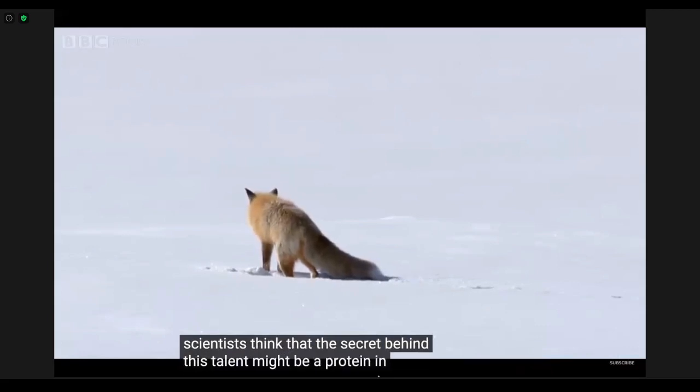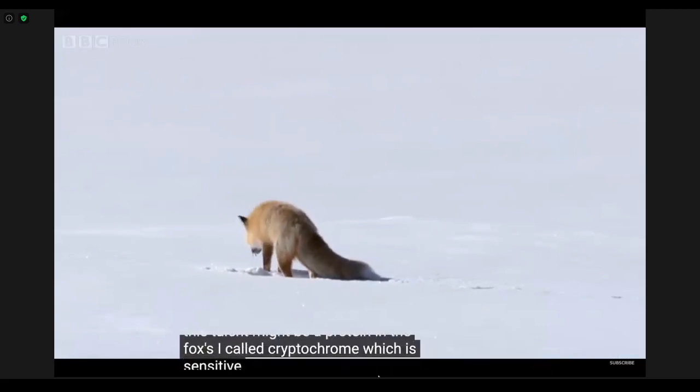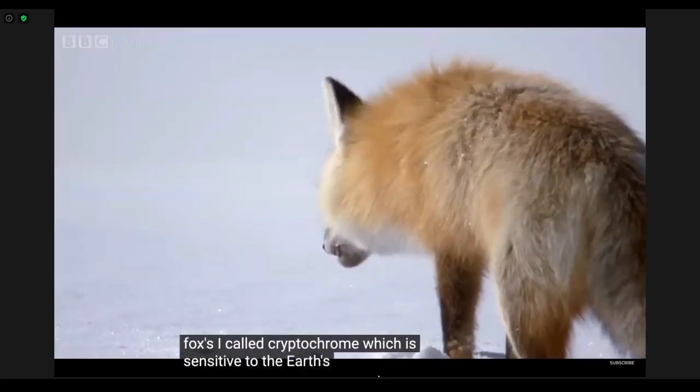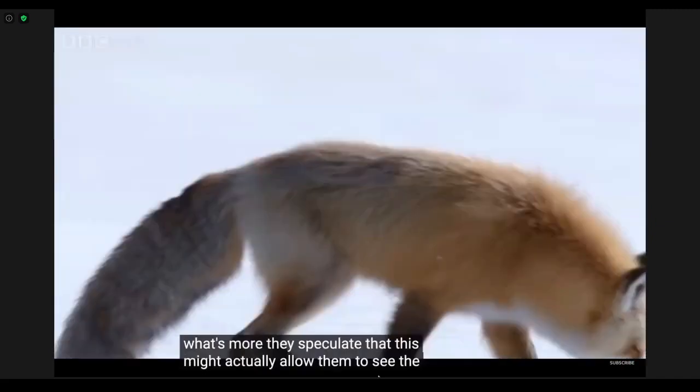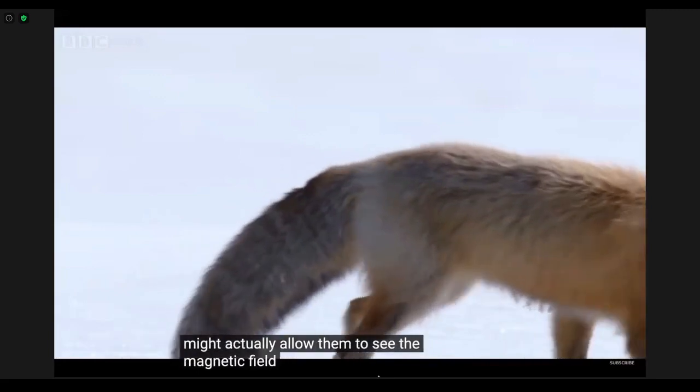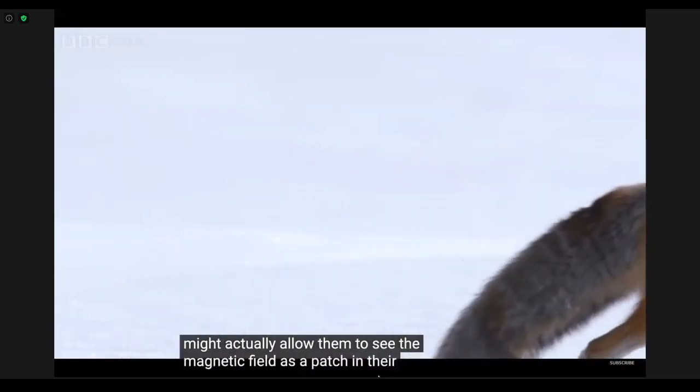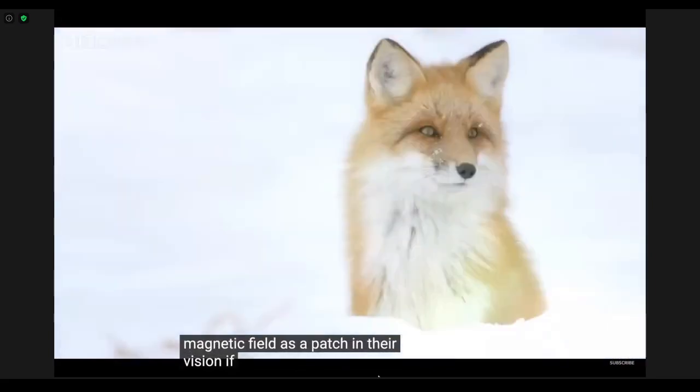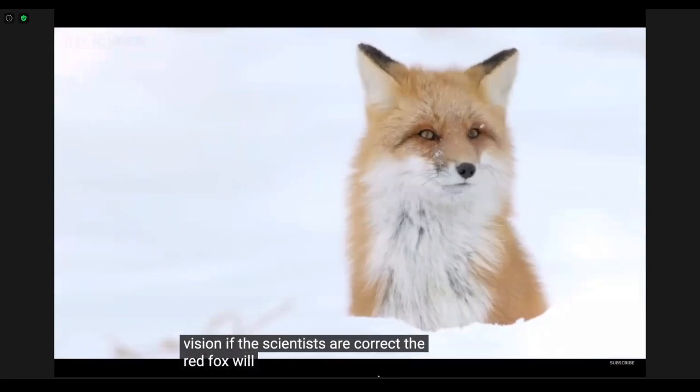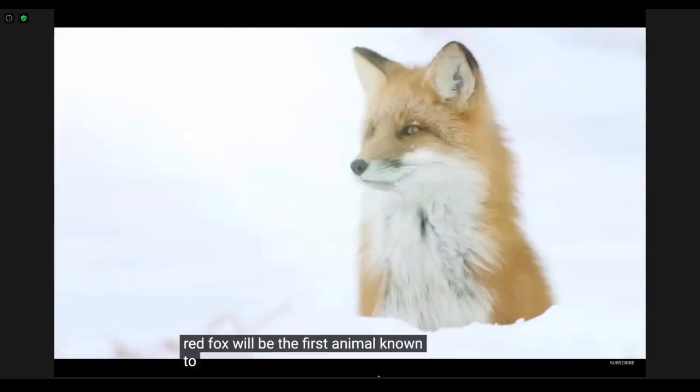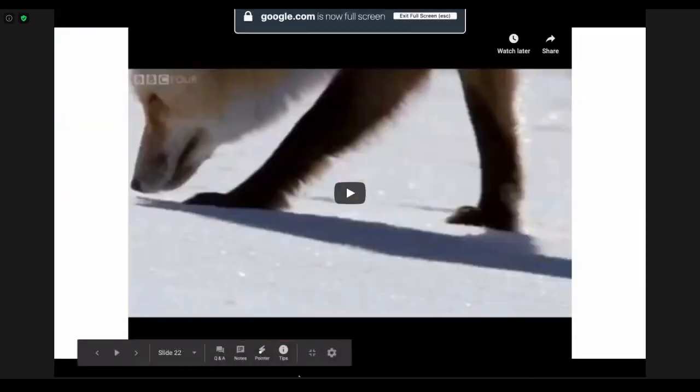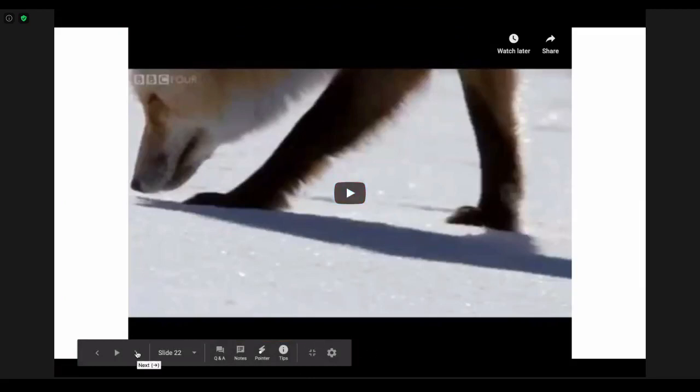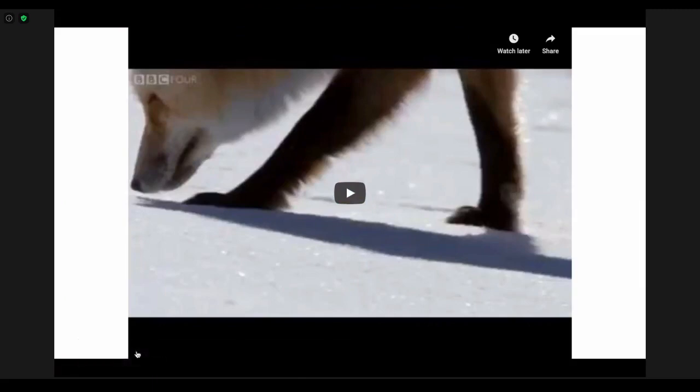Scientists think that the secret behind this talent might be a protein in the fox's eye called cryptochrome, which is sensitive to the earth's natural magnetism. What's more, they speculate that this might actually allow them to see the magnetic field as a patch in their vision. If the scientists are correct, the red fox would be the first animal known to use the earth's magnetic field to hunt. That's one of my favorite videos, just super cute how the foxes sense the magnetic field and hunt for their prey.